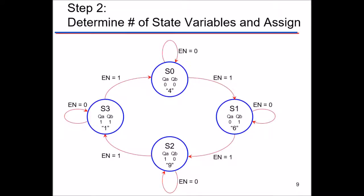The outputs QA and QB represent the two flip-flops, flip-flop A and flip-flop B. When both Qs are zero, that is state zero — just the binary number representing the state. State one is QA=0, QB=1; state two is QA=1, QB=0; and state three is QA=1, QB=1. So QA and QB are the outputs of the two flip-flops, cycling through 0, 1, 2, 3 in binary, and those represent the states.